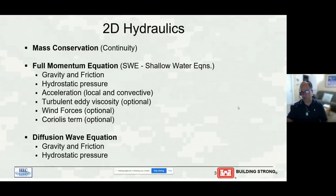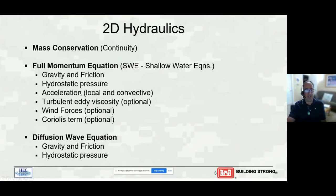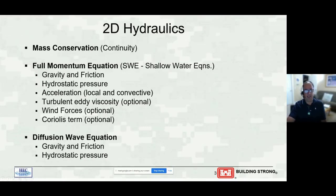Whether you're using diffusion wave or full Saint-Venant shallow water equations, there's the continuity equation for mass conservation. With the full shallow water equations, we have gravity, friction, hydrostatic pressure forces, and two acceleration terms — local and convective. You can also turn on eddy viscosity, turbulence modeling, wind forces, and Coriolis effects. With diffusion wave, we only have mass conservation, gravity, friction, and hydrostatic pressure — no acceleration terms — and the loss of those acceleration terms is huge for certain problems.